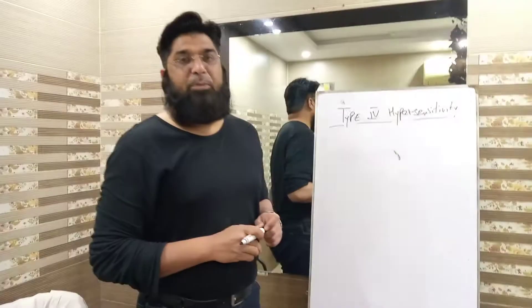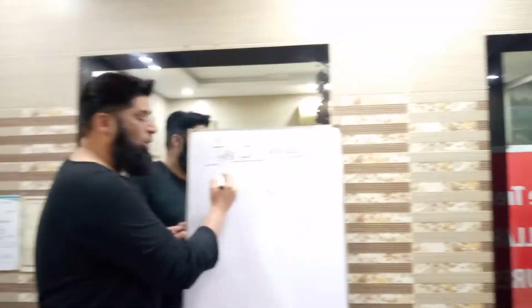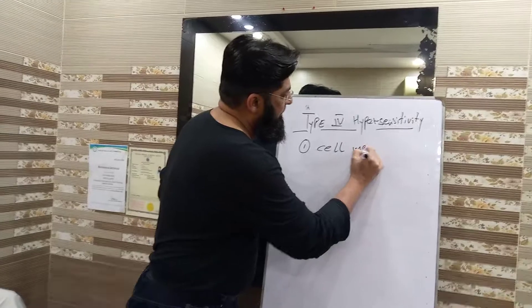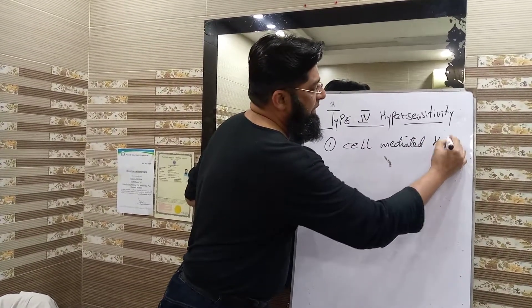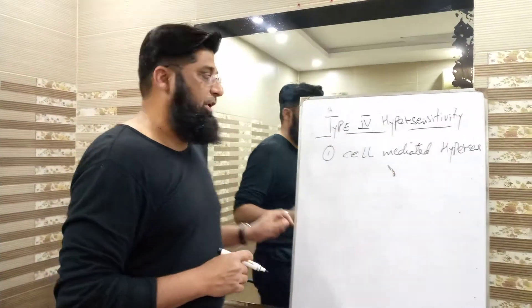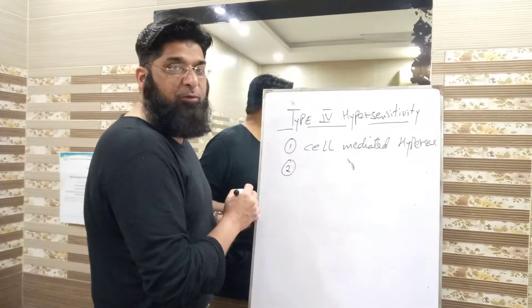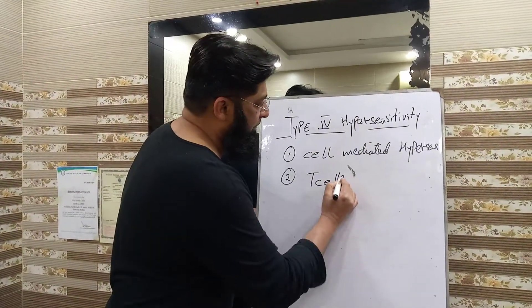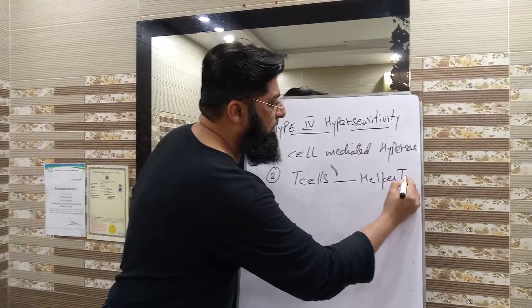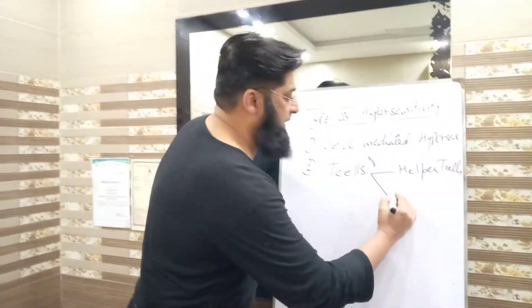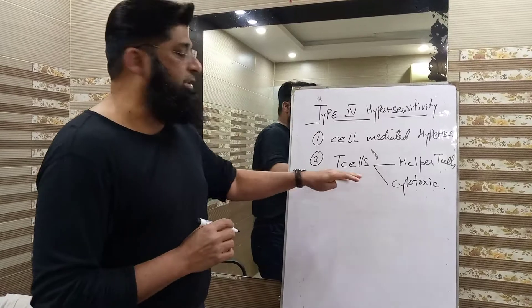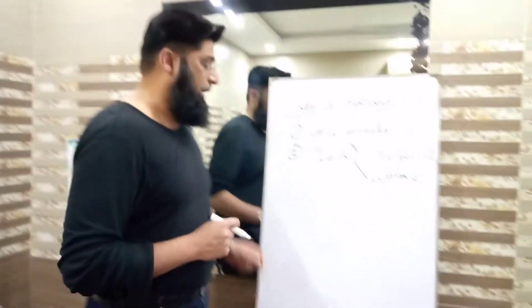Type 4 hypersensitivity reaction has the following hallmarks or characteristic features. Number 1: it is cell-mediated hypersensitivity. Number 2: the main cells involved are T cells — both populations of T cells: helper T cells and cytotoxic T cells. Both varieties of T cells play their role in type 4 hypersensitivity reaction.